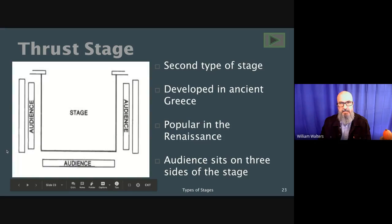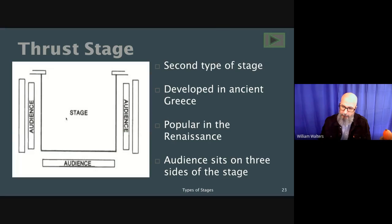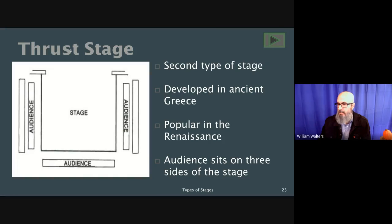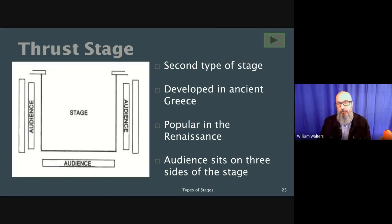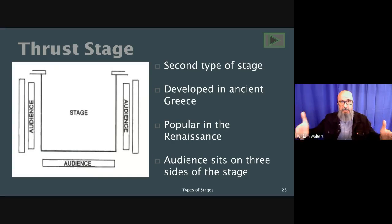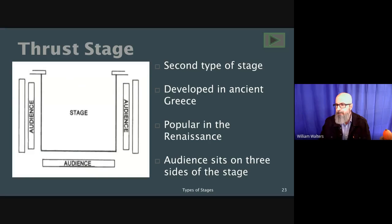The second type of stage is called a thrust stage. The stage actually comes out — what you don't see here is a proscenium in the back — and then the stage thrusts out toward the audience, which sits on three sides. For your notes, just put 'thrust stage' and 'audience sits on three sides of the stage.' Some of you may have seen this if you've gone to a concert where the lead singer walks down toward the audience — that becomes a thrust stage situation, with the band behind them in the proscenium part.